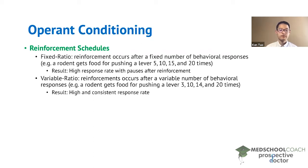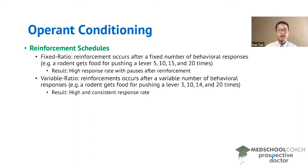This form of reinforcement schedule results in a high and consistent response rate, making it a very powerful form of operant conditioning. An example for humans is gambling. With slot machines, people will play the game over and over again because they don't know when they're going to get the reward — it's essentially random, but when they do get a reward it can be highly rewarding. The variable ratio results in a high and consistent response rate, so people sit and play slot machines for a very long time — it can be very addicting.